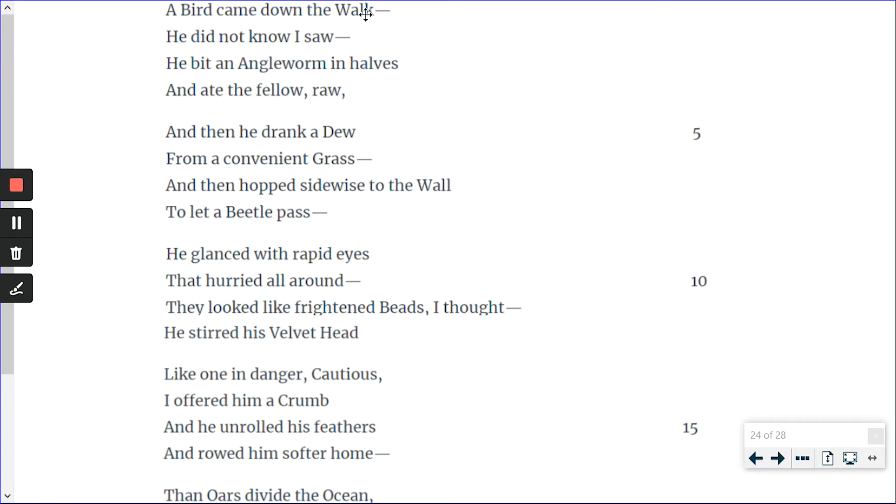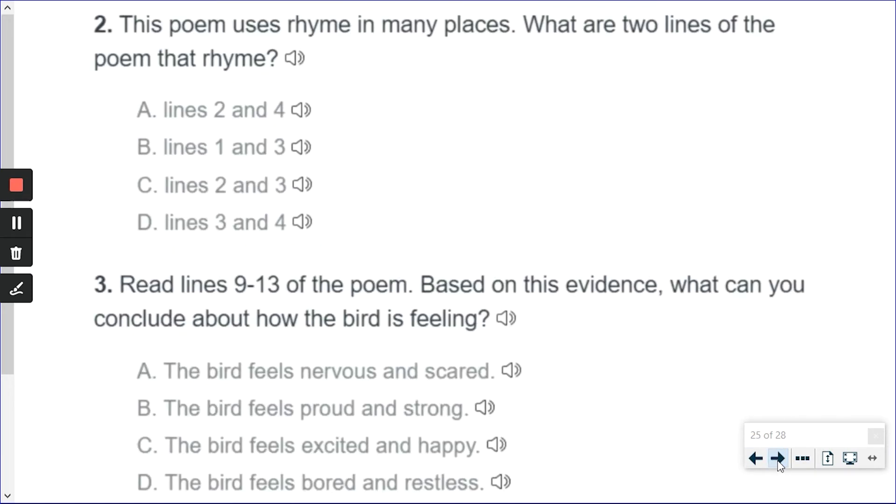This has a k at the end. This has a. So they don't rhyme. How about one and three? Walk halves. No. Now, how about two and four? Saw, raw. Yes. These two rhyme. Notice how they have this. They are spelled the same two at the end. So your answer is going to be lines two and four.